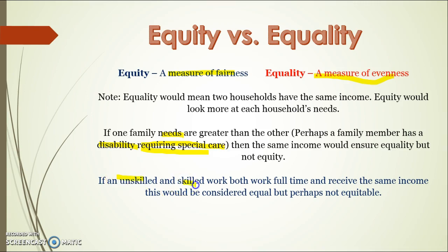Another example: if an unskilled and skilled worker received the same income — say you spend 10 years studying to be a surgeon and somebody else went straight from school into an unskilled profession — it's equal if you're both earning the same, but is that an equitable distribution? Is it fair that the person who studied for 12 years is on the same income as somebody that just finished school? Similarly, like a group assignment where five people share the same mark but only two did all the work — that's equal, but is it fair? So there are policies that help achieve equality but don't necessarily help improve equity.